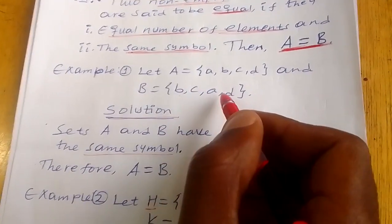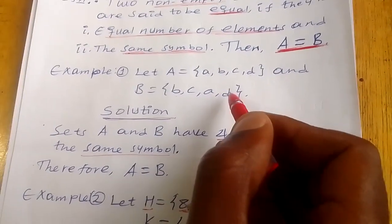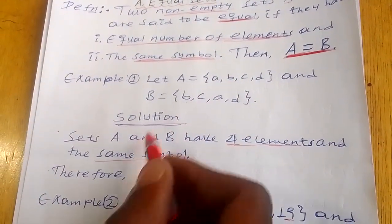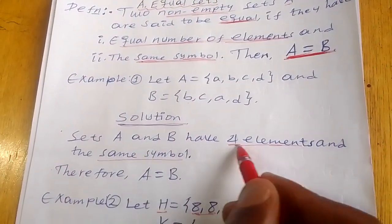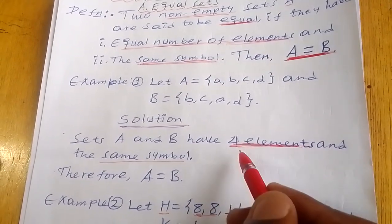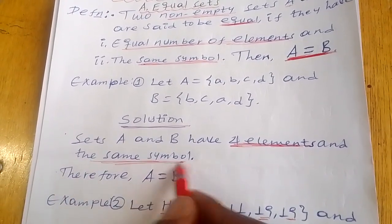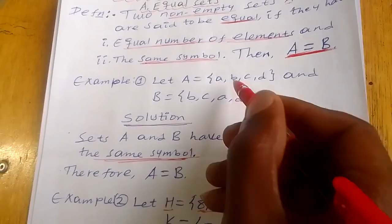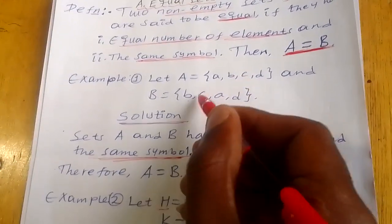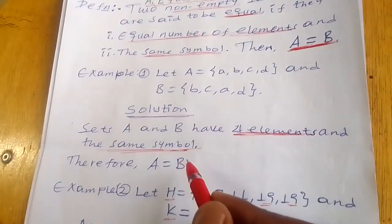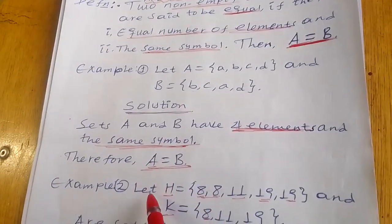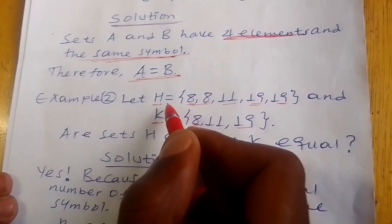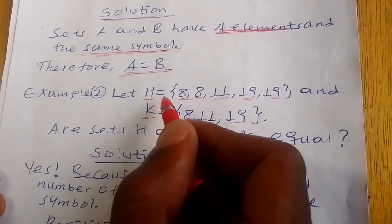If you look at this, you can see that set A and set B have equal number of elements and the same elements. Therefore, A is equal to B — they are equal sets.